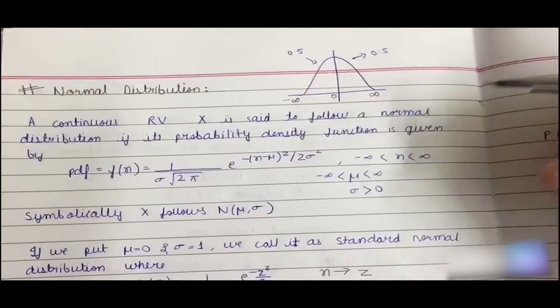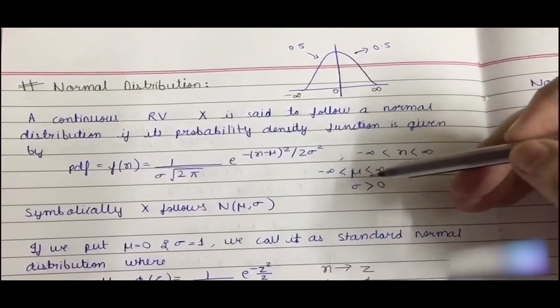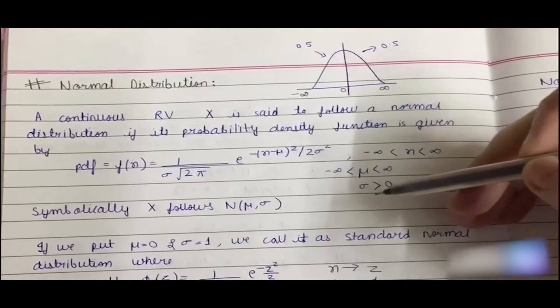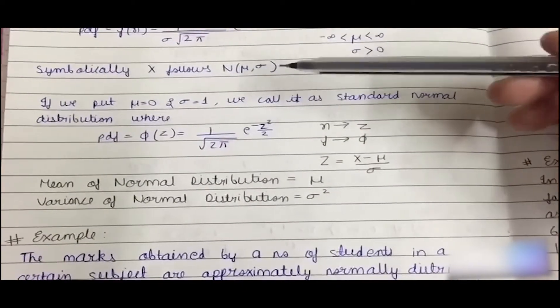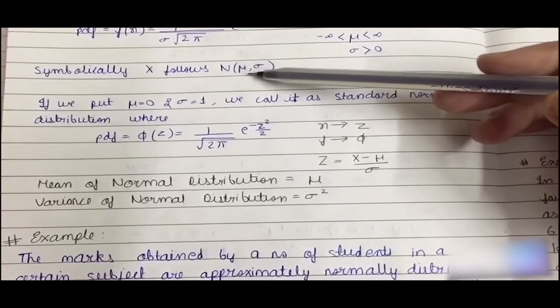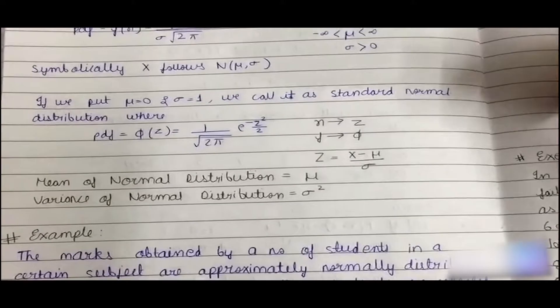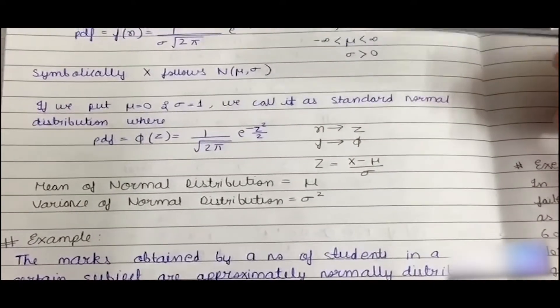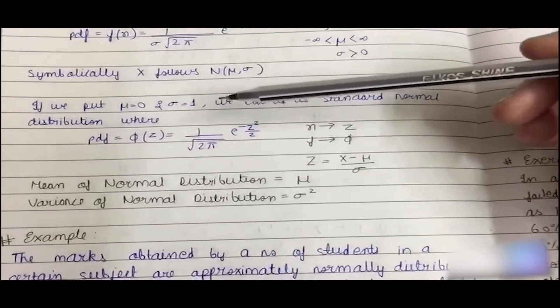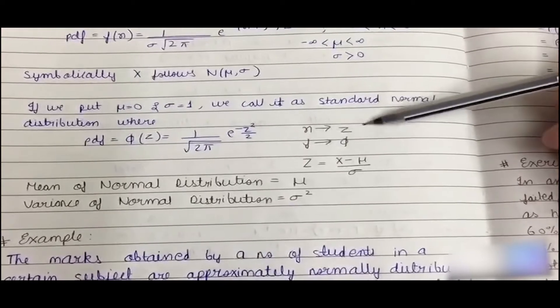X ranges from minus infinity to infinity, mu ranges from minus infinity to infinity, and sigma is greater than 0. Symbolically, X follows normal distribution with parameters as mu and sigma. Now if we put mu as 0 and sigma as 1, it would become a standard normal distribution.